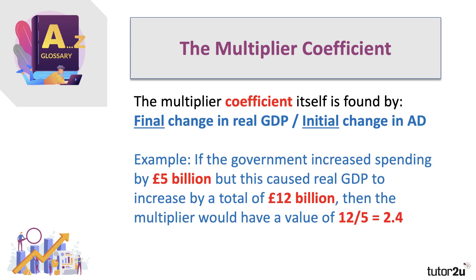For example, if the government injects £5 billion of extra spending into healthcare, new schools, or a transport infrastructure project, and this eventually causes real GDP to grow by £12 billion, that's quite a big multiplier. The multiplier would have a value of 12 over 5, which is 2.4 — a large multiplier. A £5 billion injection of demand is leading to a significantly higher level of GDP.